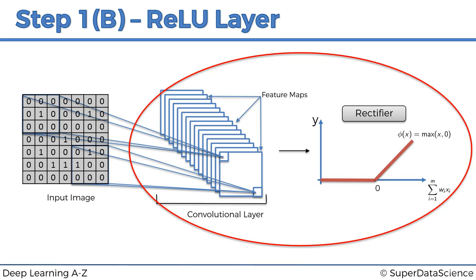At the same time, when we're applying mathematical operations such as convolution and running this feature detection to create our feature maps, we risk creating something linear. And therefore we need to break up the linearity.